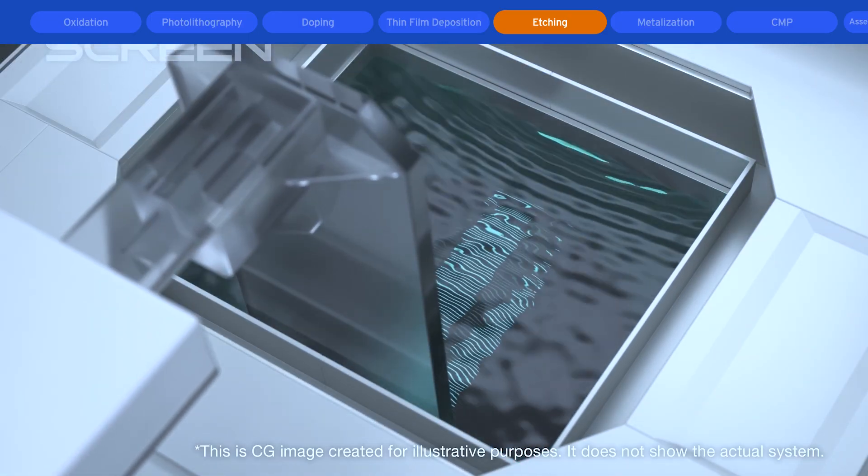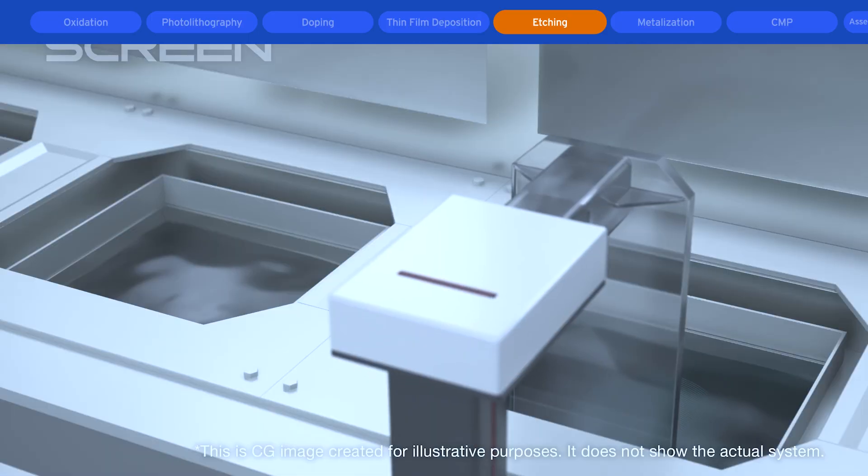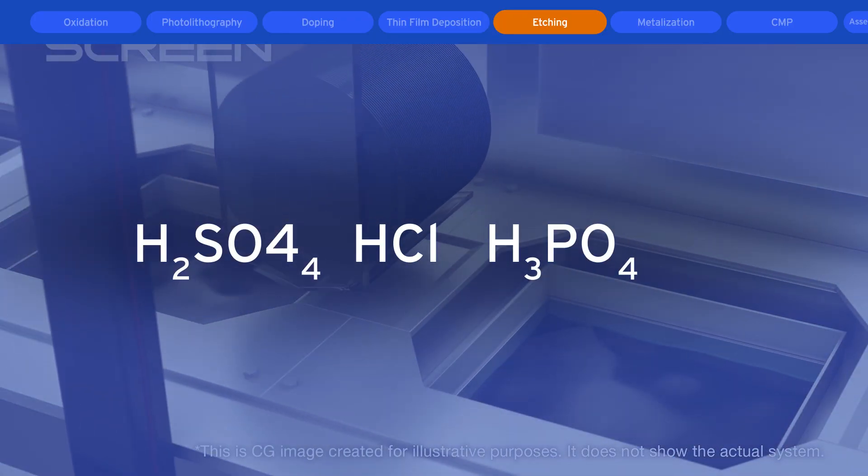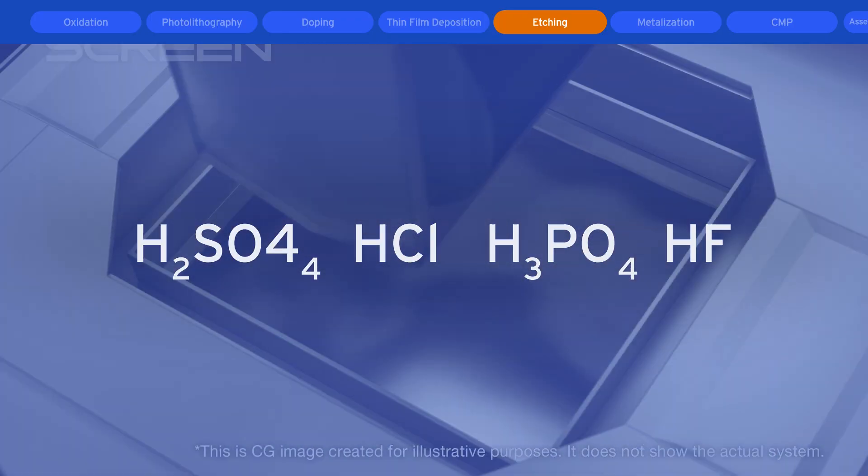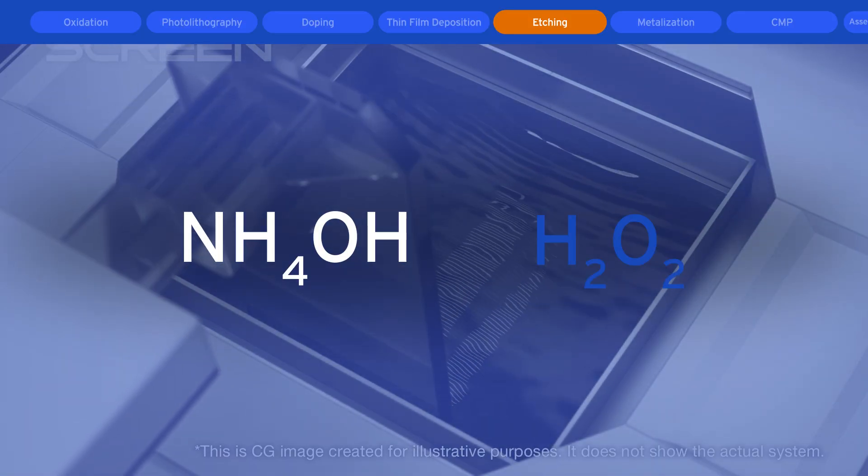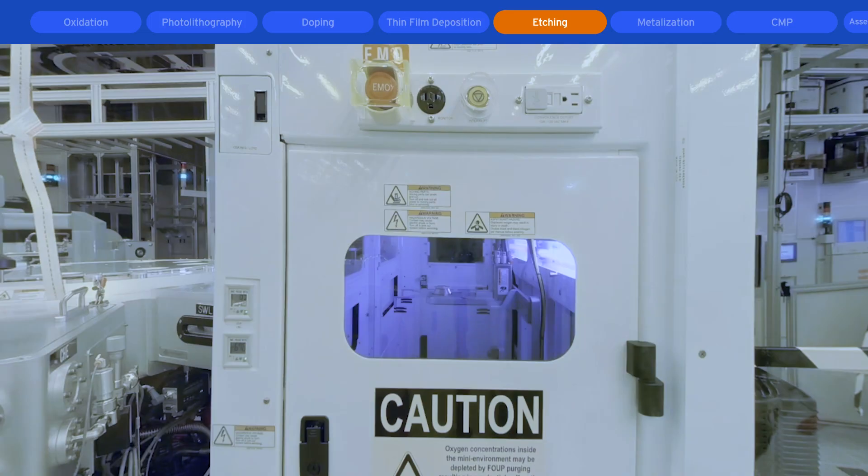Etching may be performed in a wet process using solutions of acids such as sulfuric, hydrochloric, phosphoric, and hydrofluoric, bases such as ammonium hydroxide, or oxidizers such as hydrogen peroxide. Etch is also accomplished in highly reactive plasmas using various gases such as hydrofluorocarbons and perfluorocarbons.